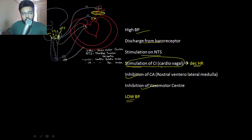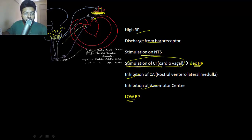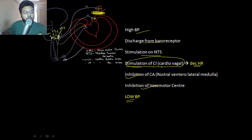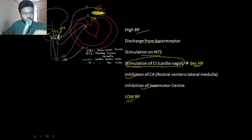If you clamp the carotid artery, no blood is going into the carotid sinus, so there is no discharge and no stimulation of nucleus tractus solitarius, and no stimulation of the cardio inhibitory center. In turn, the previously inhibited centers — the cardio-acceleratory center and vasomotor center — are no longer inhibited, so they get stimulated and increase blood pressure. In a nutshell: if more blood goes to the carotid sinus and aortic sinus, it reflexly lowers BP; if less blood goes, it increases blood pressure.